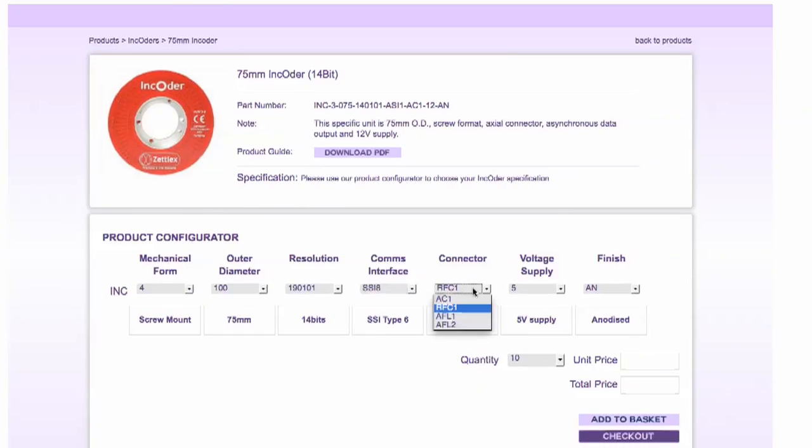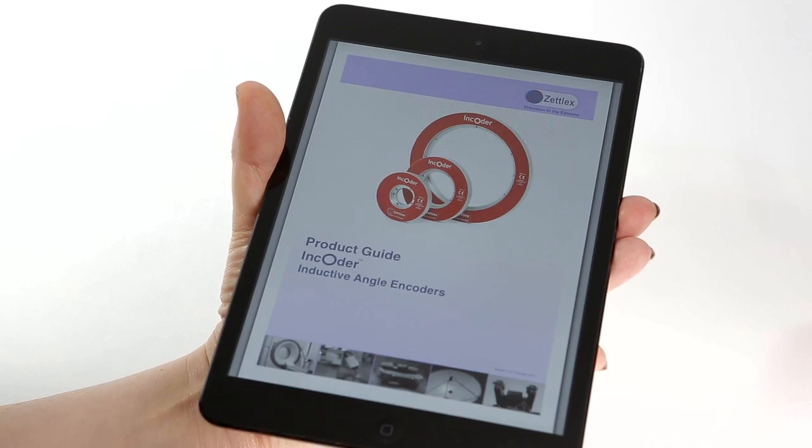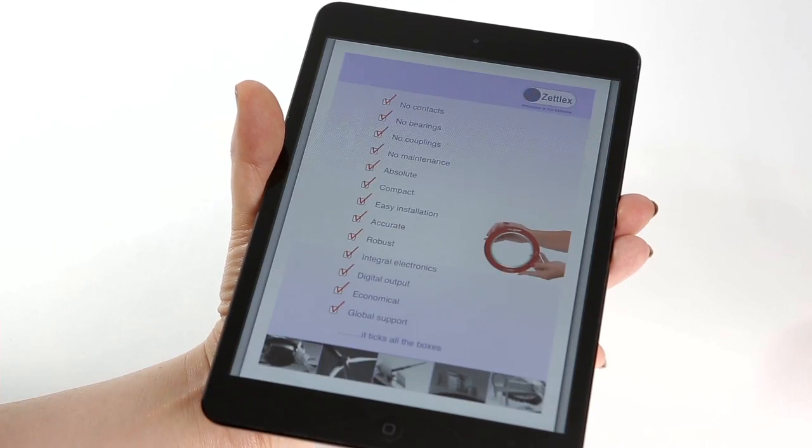You can choose from thousands of different options using our product configurator. It's easy to use. Simply select the options and build up the encoder part number. All the technical detail can be found in the encoder product guide.